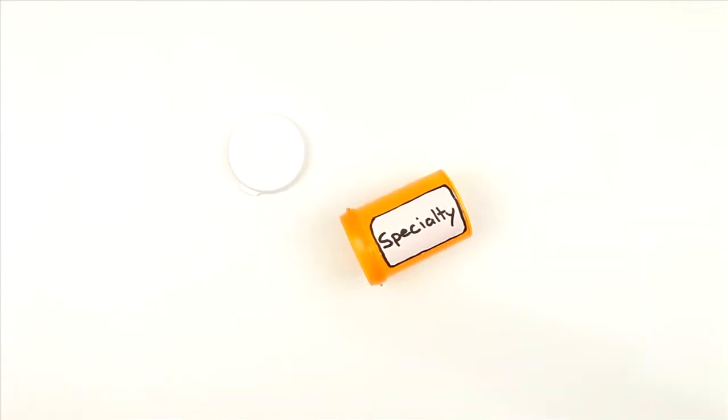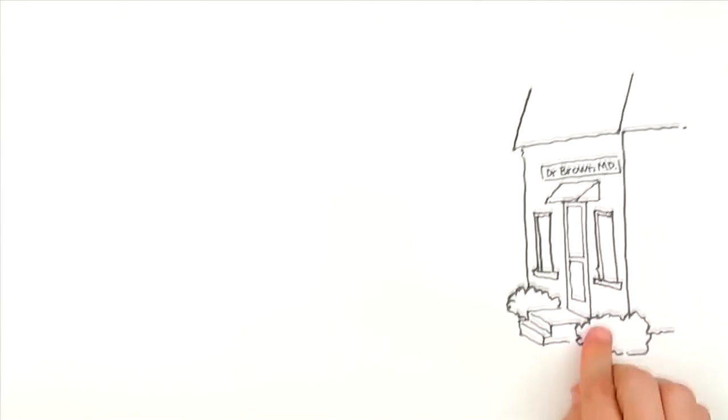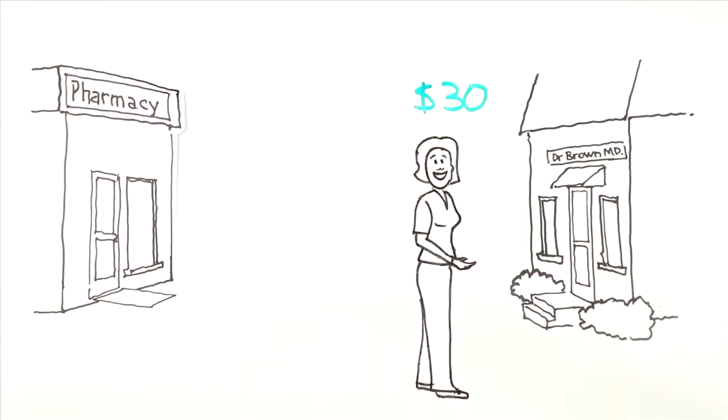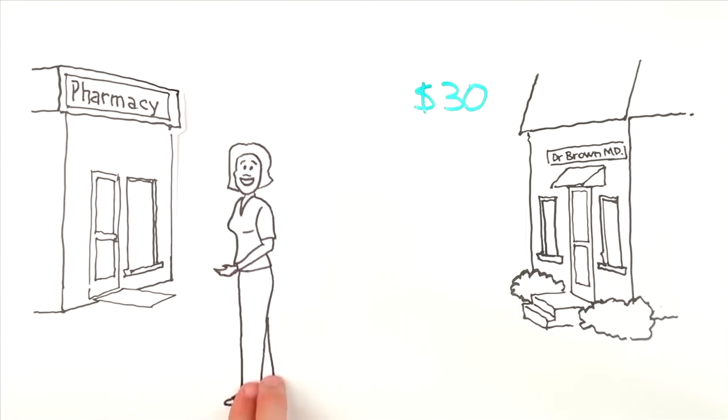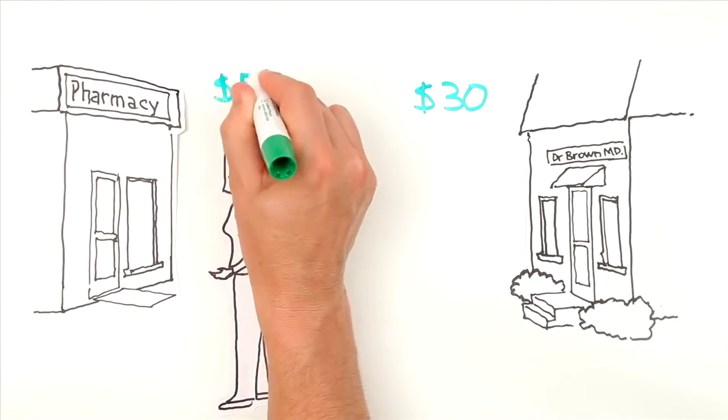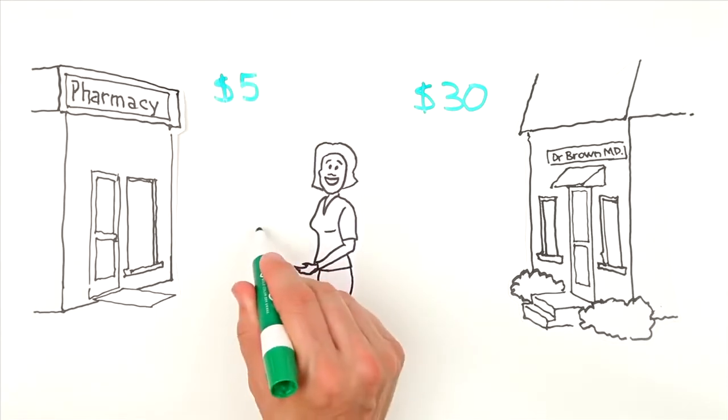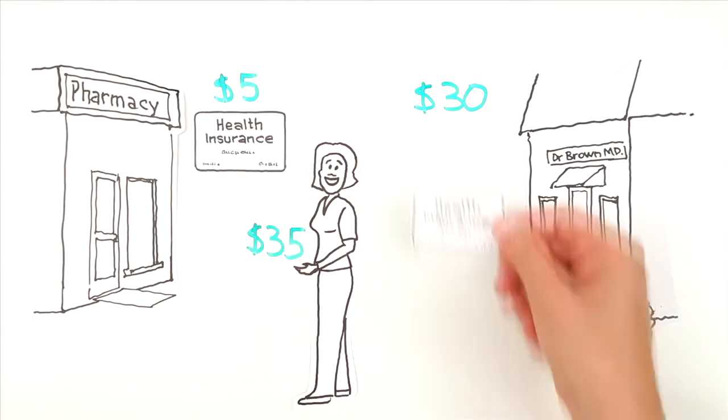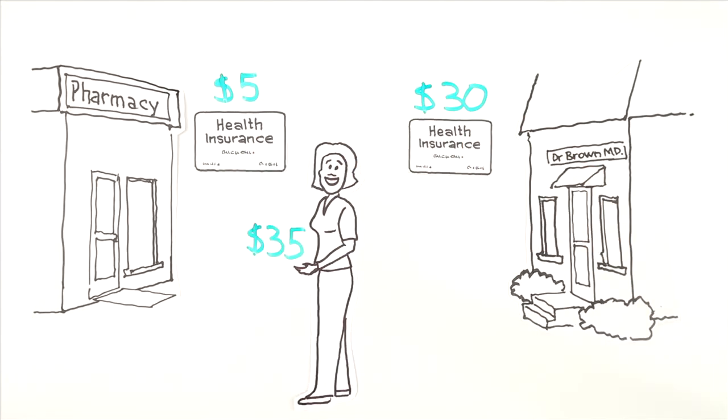Prescription drug coverage may also have co-pays, which can be higher for specialty medicines and lower for generic drugs. Let's say Gina goes to the doctor with a case of mono. Her doctor charges a $30 co-pay, and when Gina fills her prescription, she pays a $5 co-pay to the pharmacy. Her out-of-pocket costs are $35, and her insurance company will reimburse the pharmacy and the doctor for the difference between the co-pay and the cost of treatment.